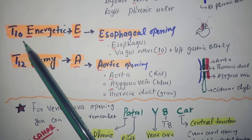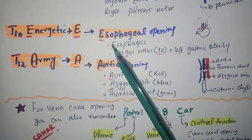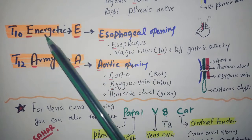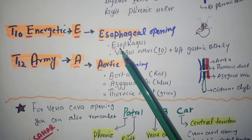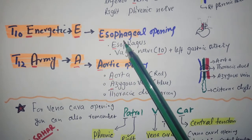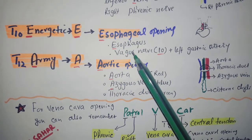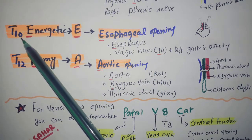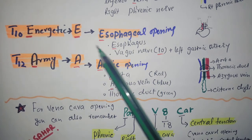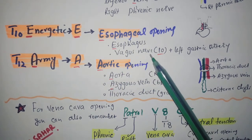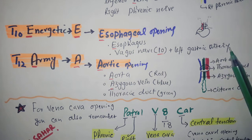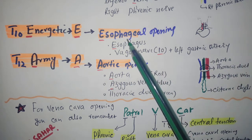The esophageal opening — 'Energetic' in the mnemonic — is located at the T10 vertebral level. It transmits the esophagus, and because it is at T10 level, the 10th cranial nerve (vagus nerve) also passes through, along with the left gastric artery and esophageal veins.